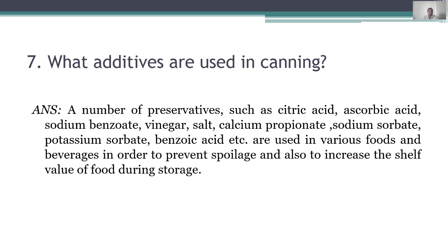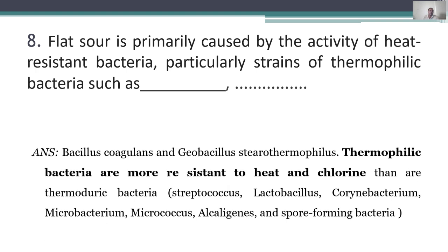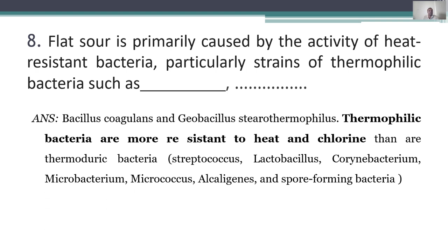Eighth question: flat sour spoilage is primarily caused by the activity of heat-resistant thermophilic bacteria, such as Bacillus coagulans and Geobacillus stearothermophilus. These thermophilic bacteria are more resistant to heat and chlorine than thermoduric bacteria. Examples of thermoduric bacteria include Streptococcus, Lactobacillus, Corynebacteria, Microbacterium, Micrococcus, and spore-forming bacteria.